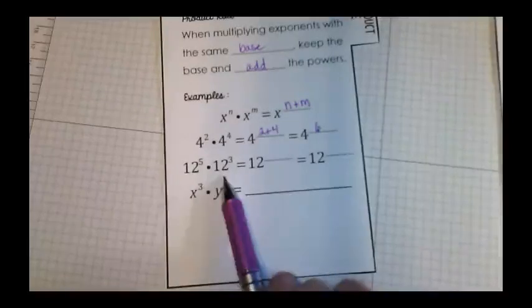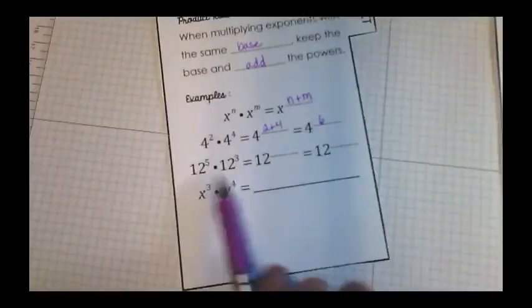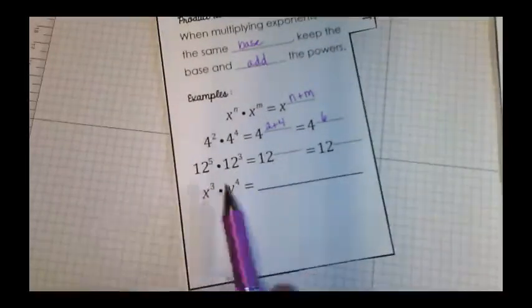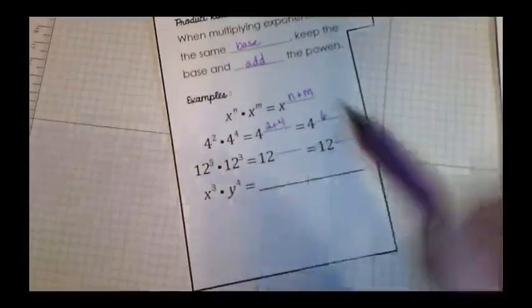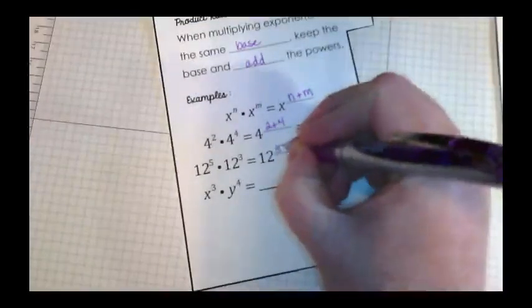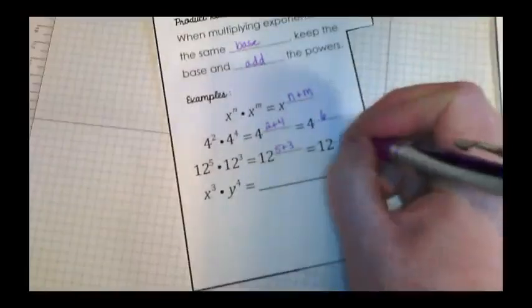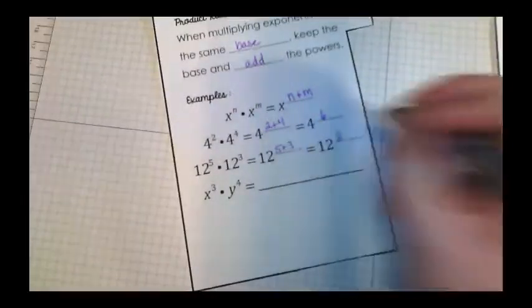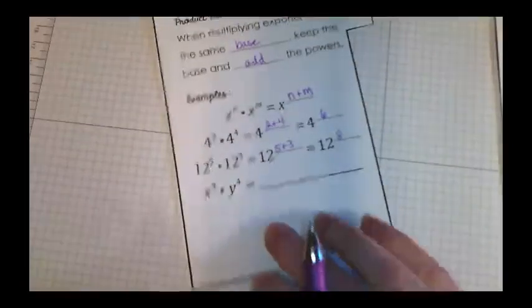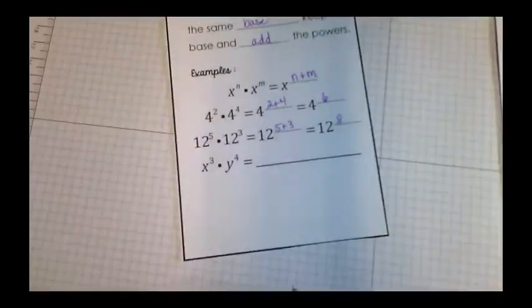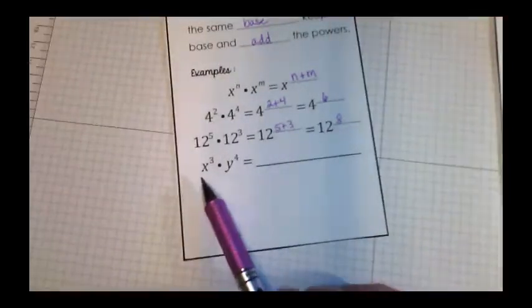Okay, 12 to the fifth and 12 to the third are being multiplied. That means the base is 12. That's already filled in for us. We're going to do five plus three and we get 12 to the eighth. And then let's take a look at our example, our last example for today.